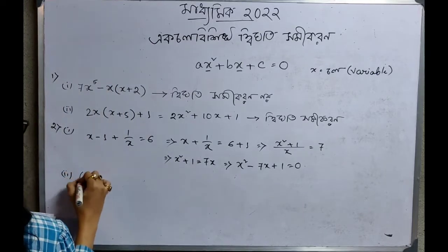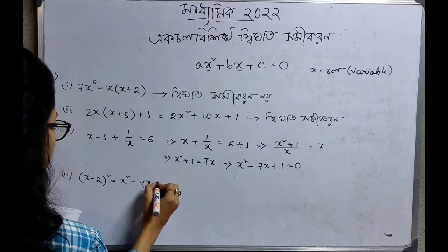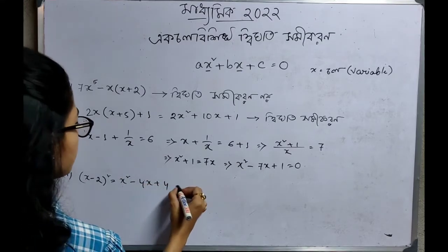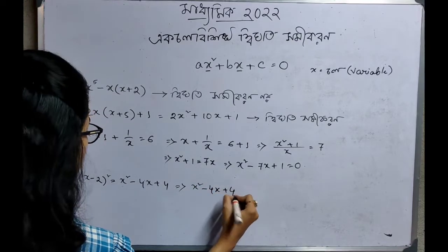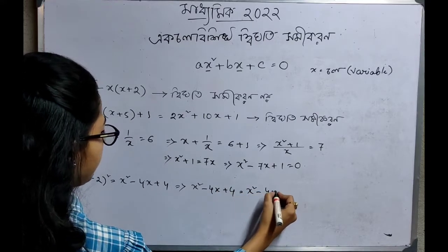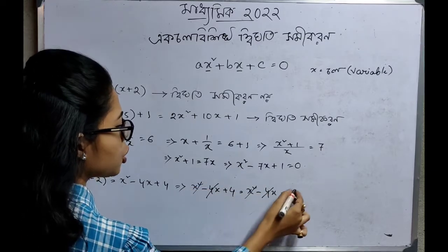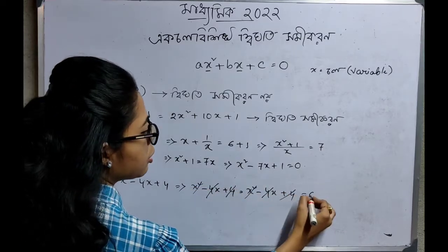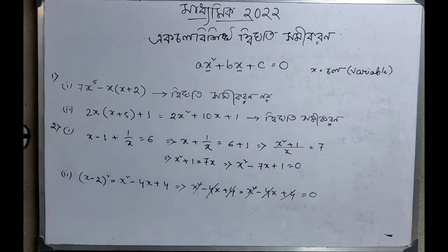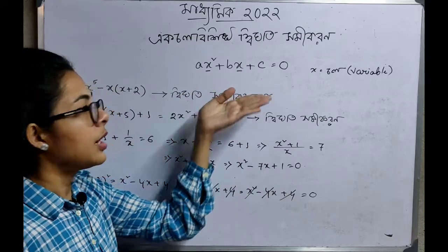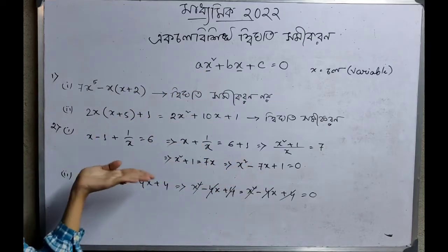Another example: x minus 2 whole square is equal to x² minus 4x plus 4. We expand using the whole square formula. After expanding, there is no x² term remaining in standard form — the equation cannot be brought into the general quadratic form ax² plus bx plus c equal to 0.